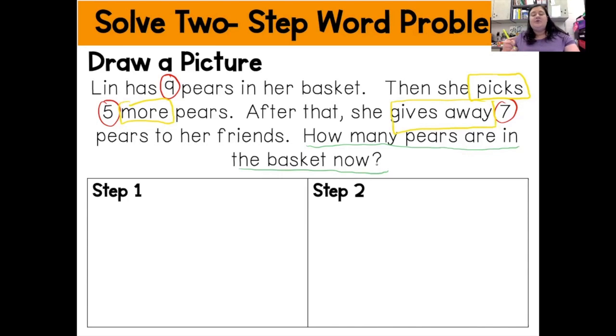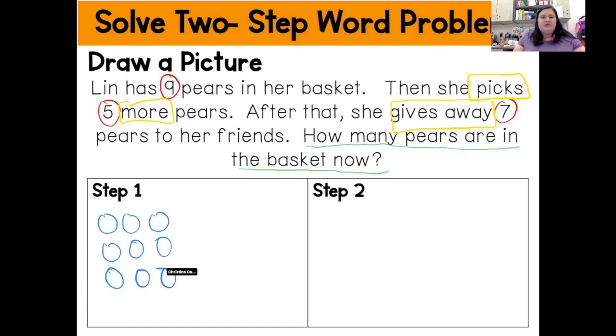So now that I've done the C, U and B of CUBES, I'm going to do E, which is evaluate. So figure out what I'm doing first. And the strategy that I'm using for this time is to draw a picture. So Lin has nine pears in her basket. So I'm going to go ahead and I'm going to draw nine pears. And my circles are going to represent those nine pears. And then it says that she picks five more. So I'm going to draw five more pears because when you're picking things and you're adding them to your basket, you're gaining more. All right. So that's nine plus five. Let me see the total number of pears that she has now. And I'm going to count them up.